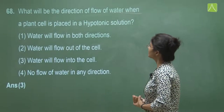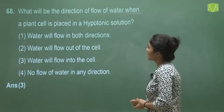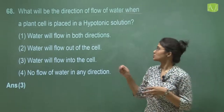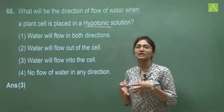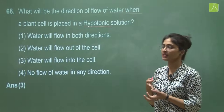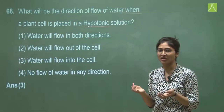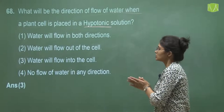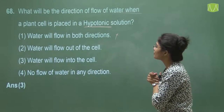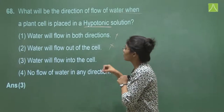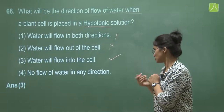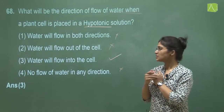Question 68 asks what will be the direction of flow of water when a plant cell is placed in a hypotonic solution. A hypotonic solution has more water and less concentration of solutes. When a plant cell is placed in it, water will flow from outside into the cell. Option one, water flows in both directions — wrong. Option two, water flows out of the cell — wrong. Option three, water flows into the cell — correct. Option four, no flow — wrong. The answer is option three.